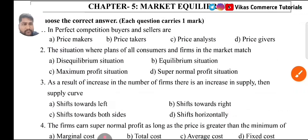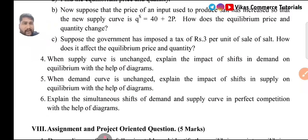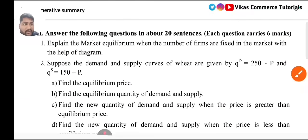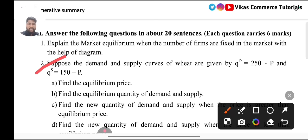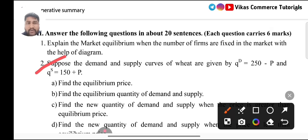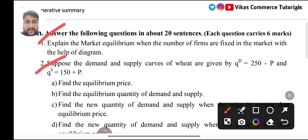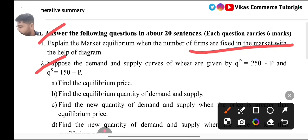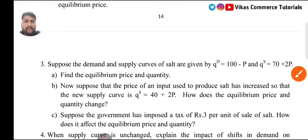Coming to Chapter 5: Market Equilibrium — a most important chapter. For 6 marks, there is one problematic type question where demand equation QD = 250 minus P and quantity supply = 150 minus P are given. You need to find equilibrium price, equilibrium quantity of demand and supply. I will solve this in a separate video. Another important question is Question 1: market equilibrium when the number of firms are fixed in the market with the help of a diagram. Questions 1 and 2 are the two important questions.